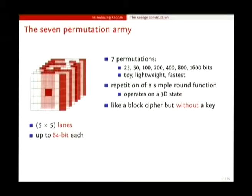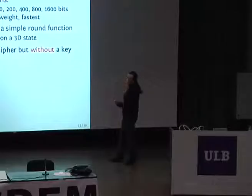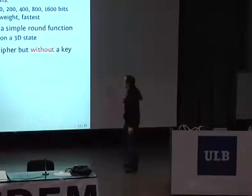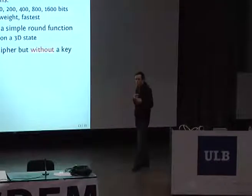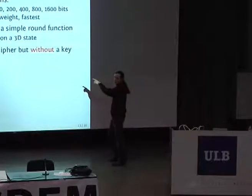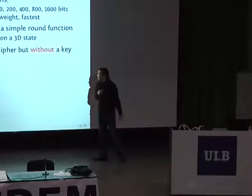We start from a small toy variant which is only 25-bit wide, up to 1,600-bit wide. The smaller one is more for toys to play with and analyze it, where the biggest one is really to get the most speed. You can use the middle ones, for instance, for lightweight applications like embedded systems. Basically, these permutations are applied to some three-dimensional state. You have more or less 25 what we call lanes, and each of these lanes is 64-bit wide for the biggest variant.